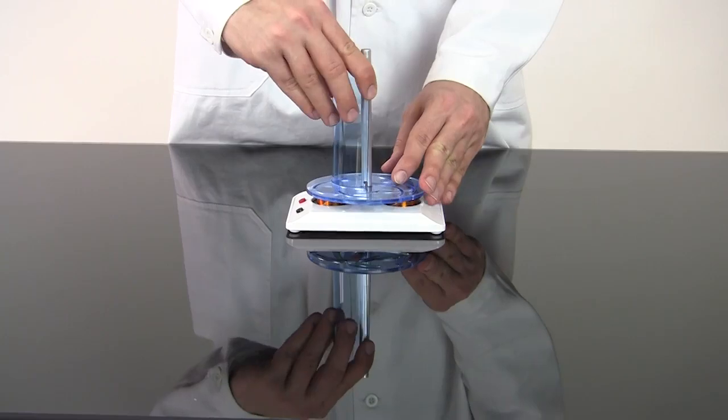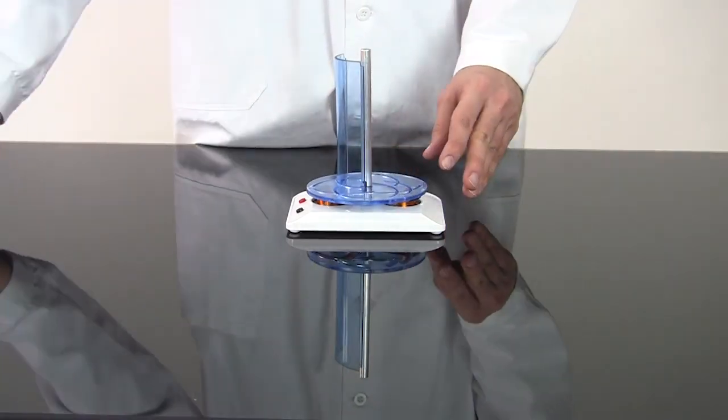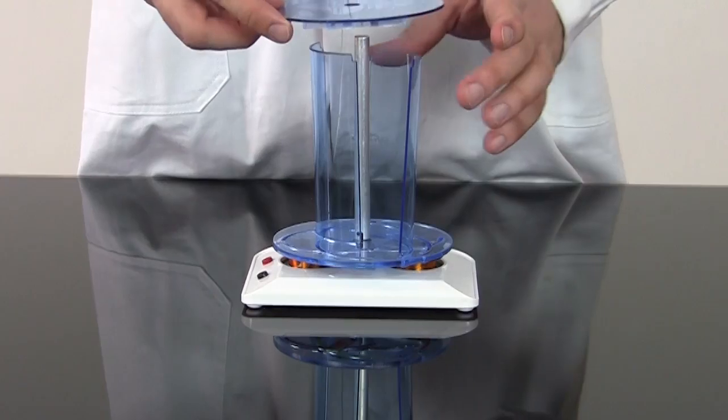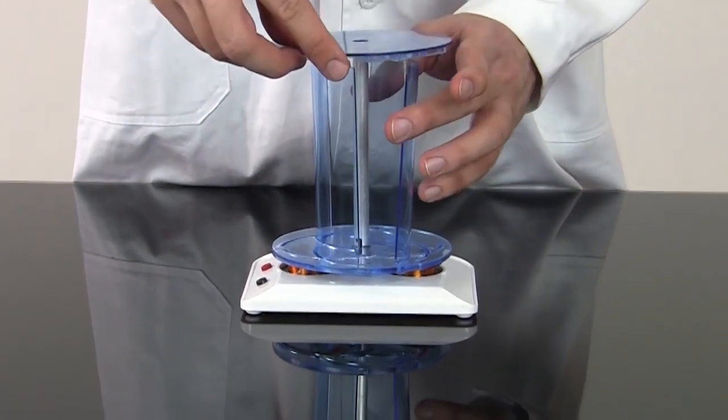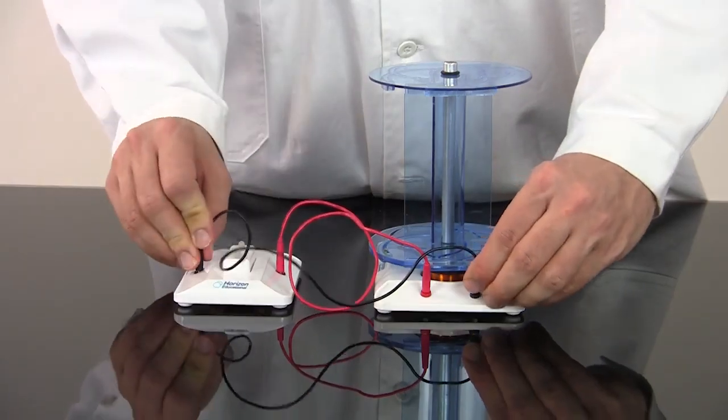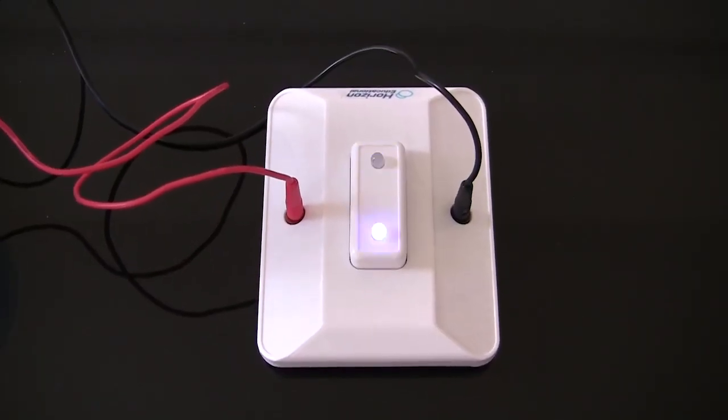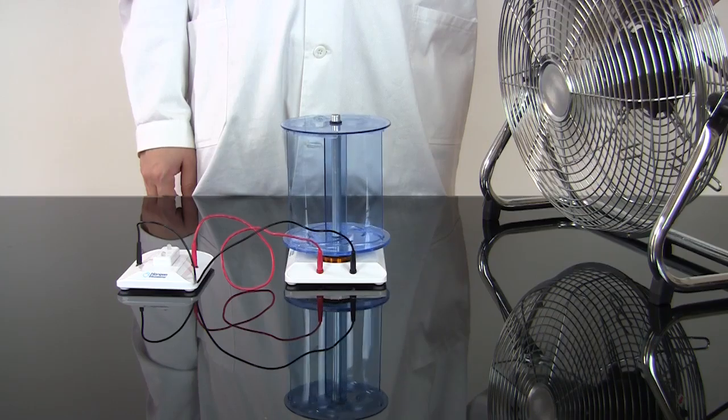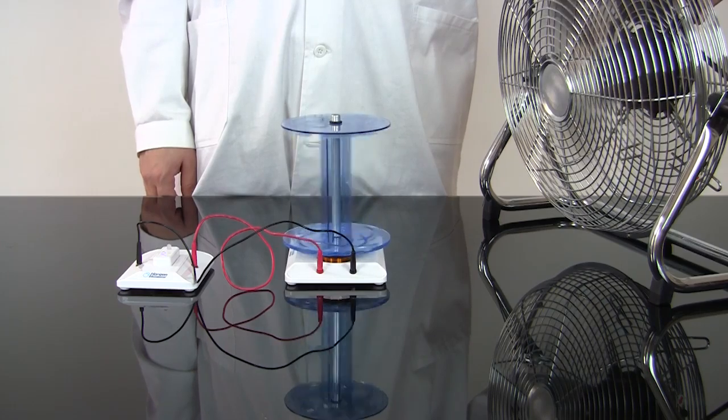Clear plastic construction lets students see the magnets and wire coils that make the generator work, while the included LED module gives a visual representation of the turbine's electrical output.